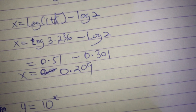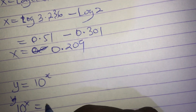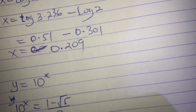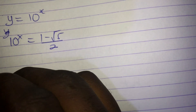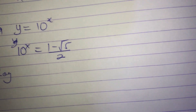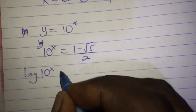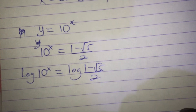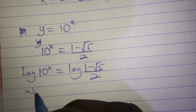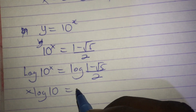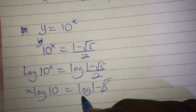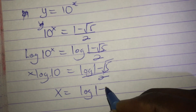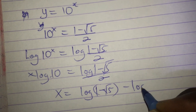For the second case: 10 exponent x equals (1 minus root 5) divided by 2. Taking log of both sides: log of 10 exponent x equals log of (1 minus root 5) divided by 2. So x log 10 equals log(1 minus root 5) minus log 2. Since log 10 equals 1, x equals log(1 minus root 5) minus log 2. However, 1 minus root 5 is negative, so log of a negative number is undefined — this case yields no real solution.